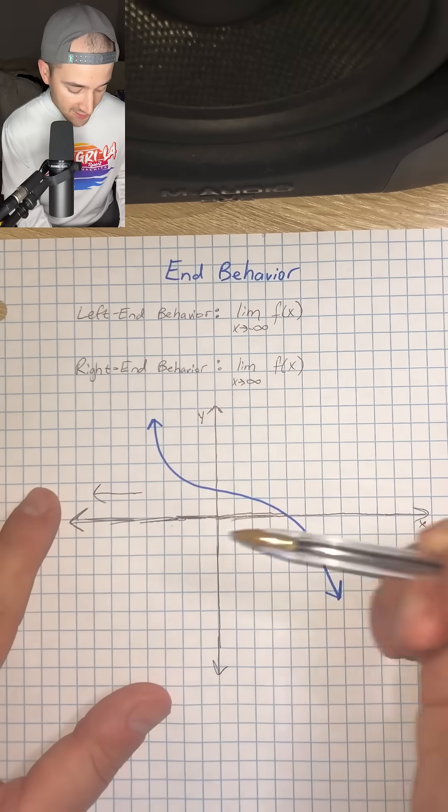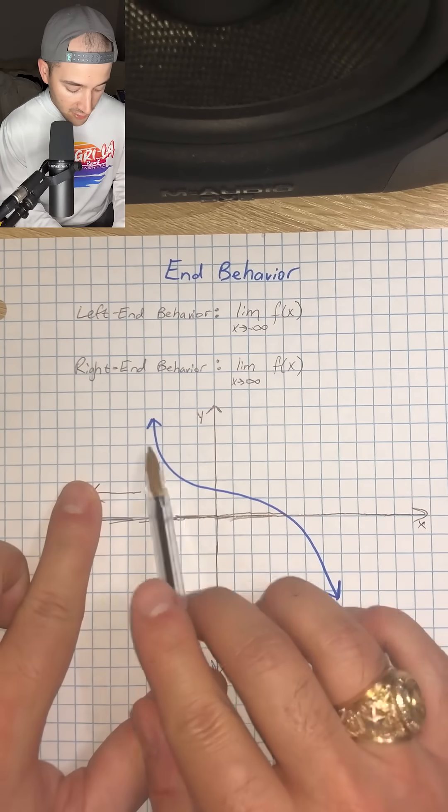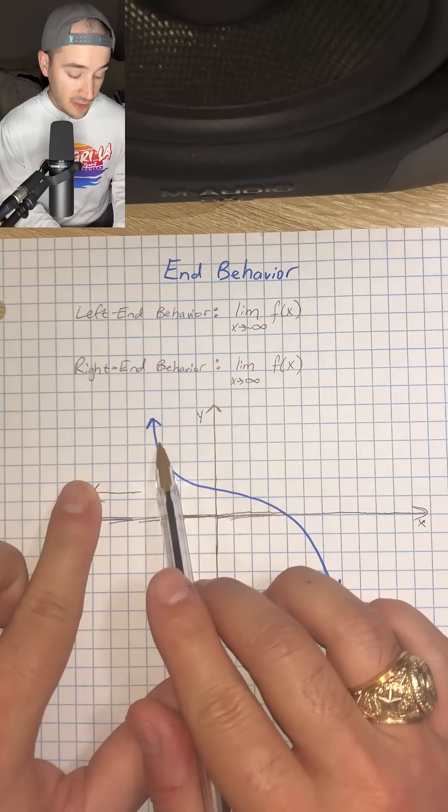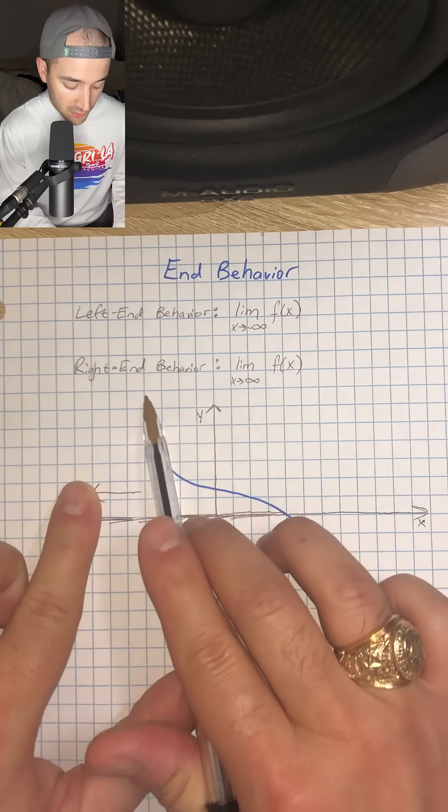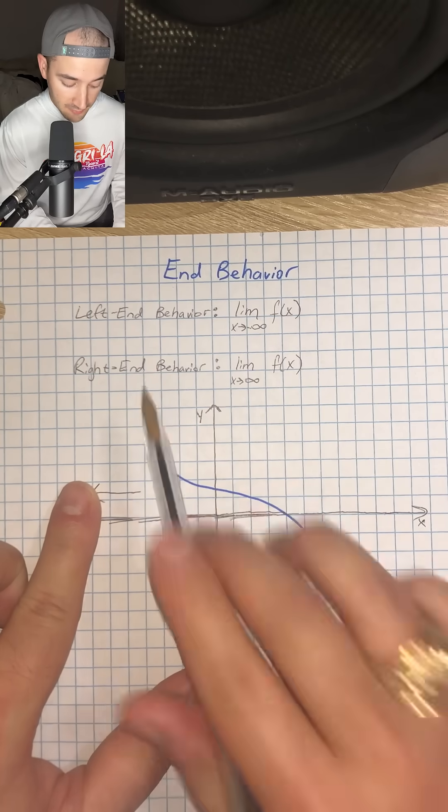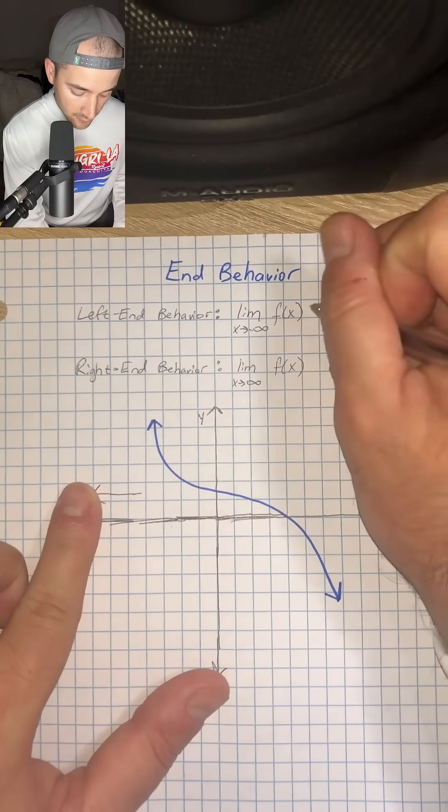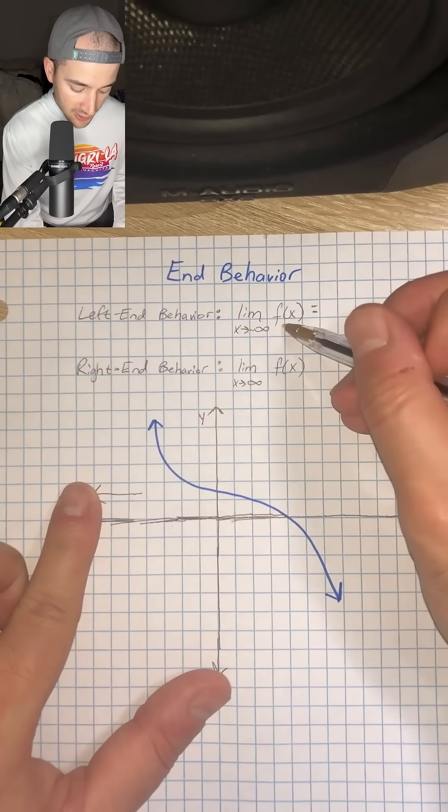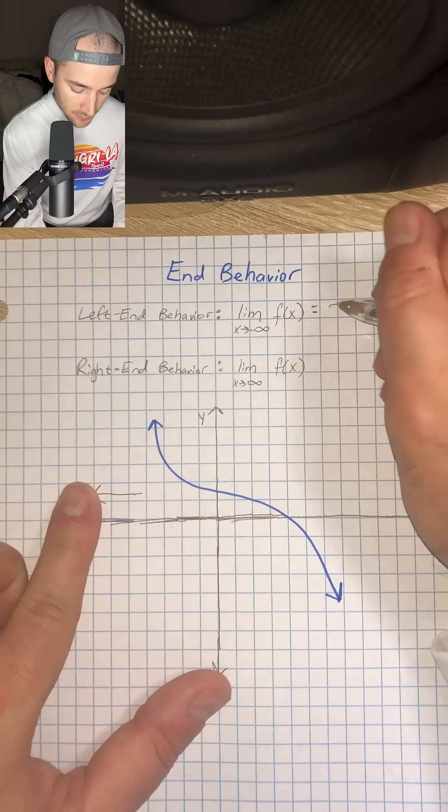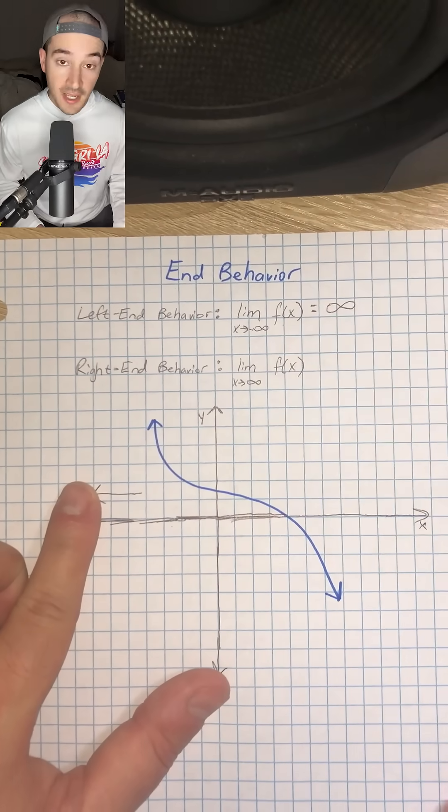So as x is going towards negative infinity to the left, f of x, or our y value, is increasing going towards positive infinity. So the limit as x approaches negative infinity of f of x is equal to positive infinity.